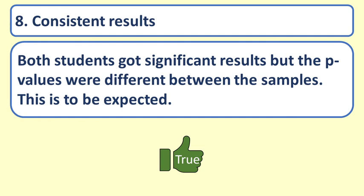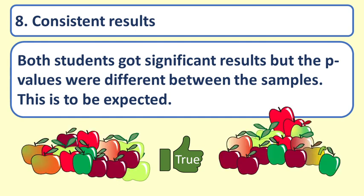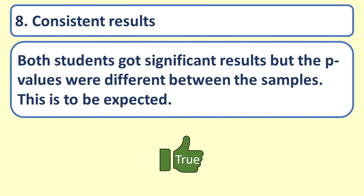True. Just as one sample will differ from another due to sampling variation, so will the p-values that are calculated from the samples differ from each other. It would be surprising if one sample found a significant result and the other one had a result that was not significant. But, if the p-values are near the significance level, this could happen.